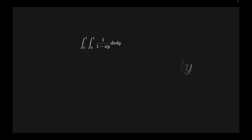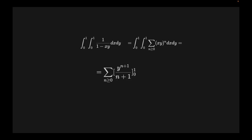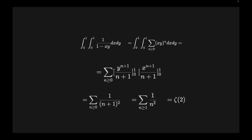Why is that the case? It starts with looking at the integrand and seeing that it resembles the solution of a geometric series. We write the geometric series of the integrand, drag the sum out of the integral, and integrate with respect to y then x. Evaluating at the limits 0 and 1, we get the sum from n=0 to infinity of 1 divided by (n+1)², and with a simple index shift starting at n=1 we get the formula for the zeta function of 2.